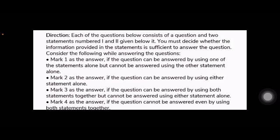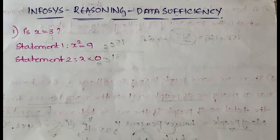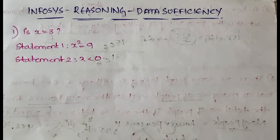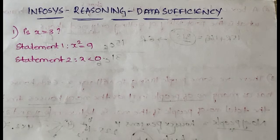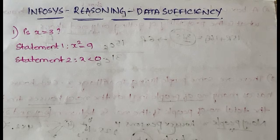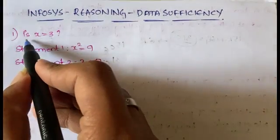First, try to understand the options clearly. Now let's look at some example problems — previously asked questions — so you can get a sense of what kind of questions are asked in Infosys and how to handle them. Data sufficiency is one of the most confusing parts because the options feel very similar. We're going to discuss five examples in this video.